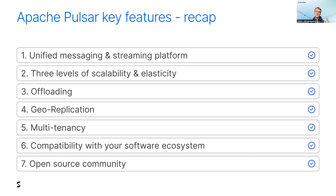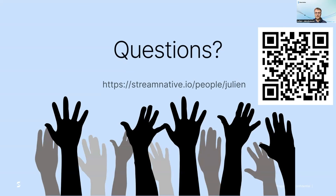Here is a quick recap. Pulsar is a unified messaging and streaming platform handling both patterns at the same time, so you only need one platform to manage. Pulsar excels at both scaling and being elastic. Pulsar can offload to external, cheap, and unlimited storage. Pulsar has geo-replication built-in, which is great for disaster recovery. Pulsar is natively multi-tenant. Pulsar is compatible with your ecosystem, and all these great features are available as open source — so you have no vendor lock-in. Feel free to scan the QR code to contact me and get access to additional resources, try out Pulsar by downloading it, installing the operators, or signing up for Stream Native Cloud. See you soon!